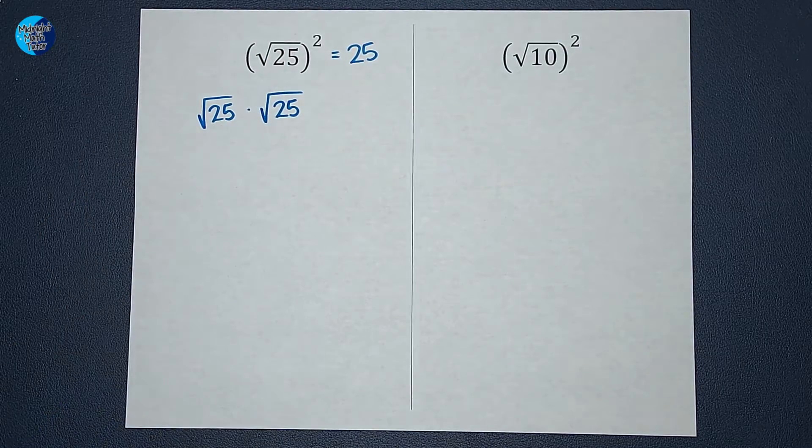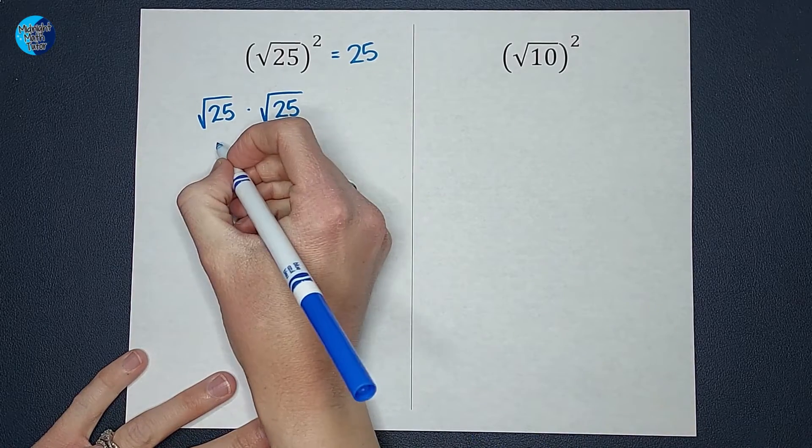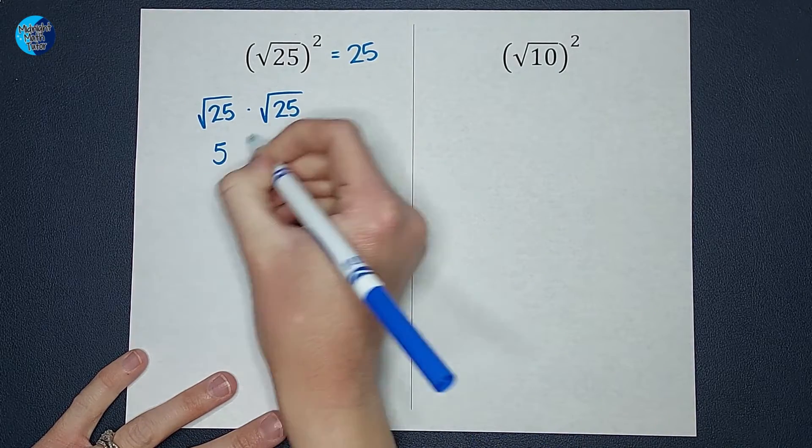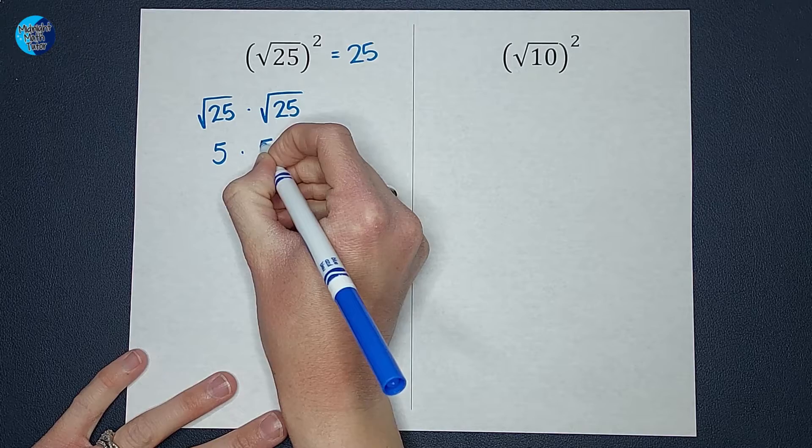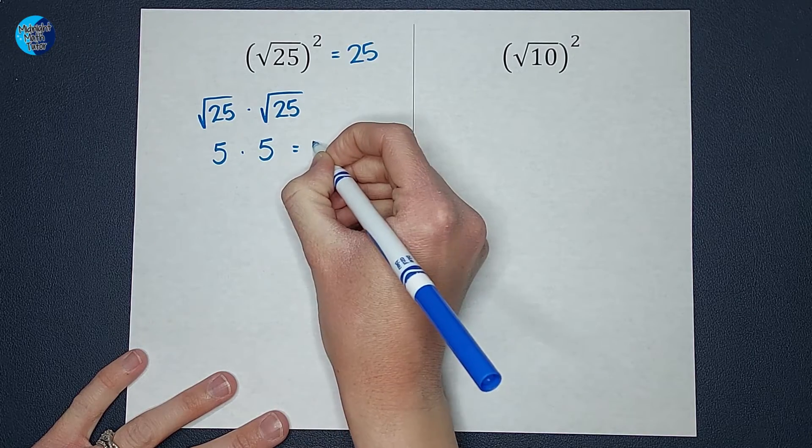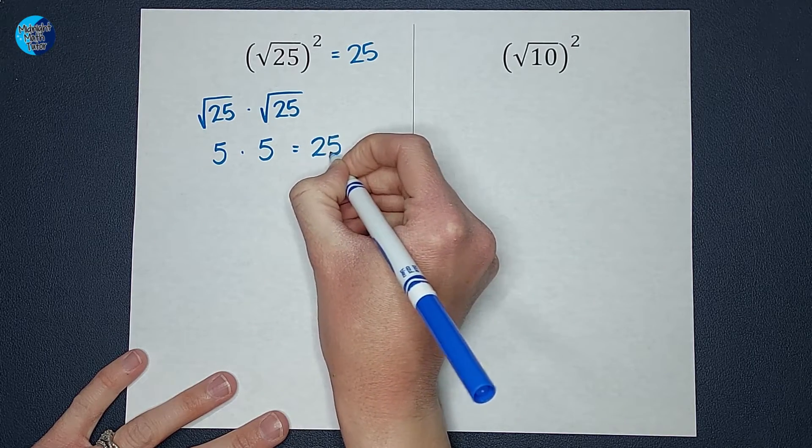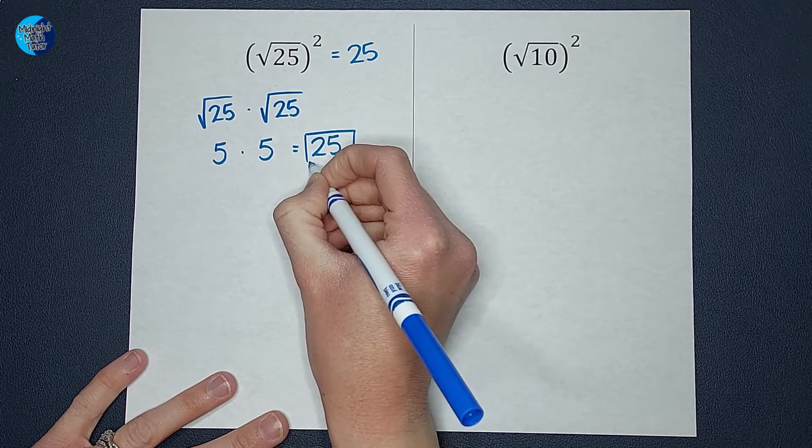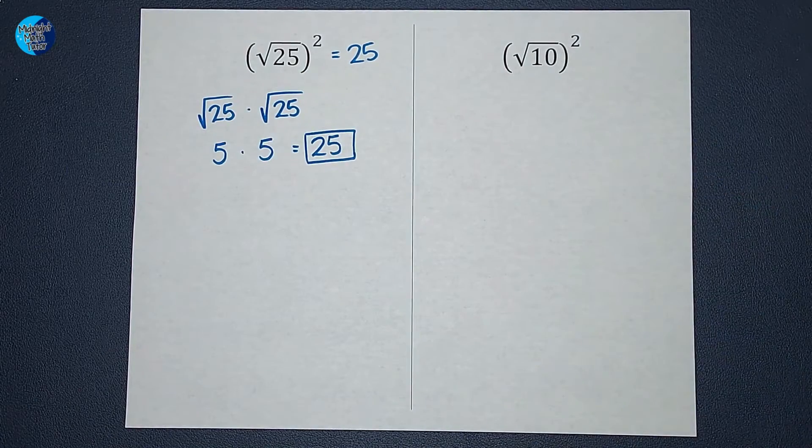Now if I wanted to simplify these, I know the square root of 25 is 5 and the square root of 25 is 5 and guess what? 5 times 5 is 25. Look at that. Oh my gosh, see how those just cancel each other out.